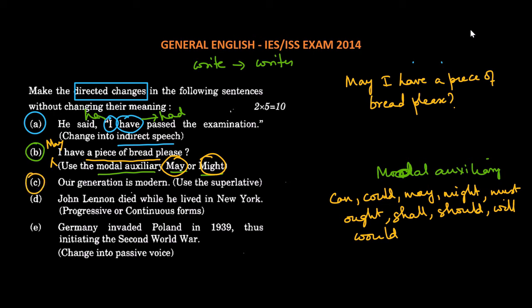Okay, next one. This one says that we have to use the superlative. So the sentence says, our generation is modern. Now in order to use the superlative of modern, we have to add the word most. So it will be, our generation is most modern. And whenever we are adding most, we have to add the, our generation is the most modern.